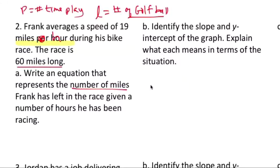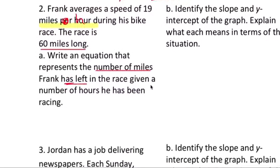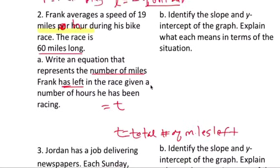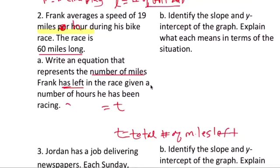Total number of miles he has left. So A equals to A, which is total number of miles left. Okay, for the race.